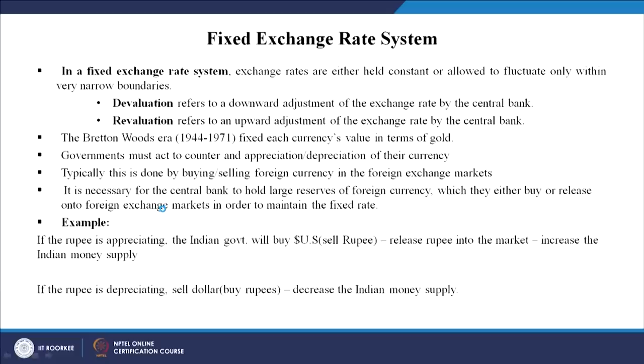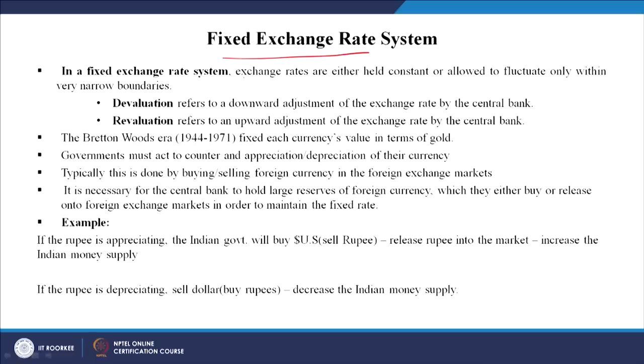As the name suggests, a fixed exchange rate system means it will not move, it will stick as it is. In a fixed exchange rate system, exchange rates are either held constant or allowed to fluctuate only within very narrow boundaries - that means there is a ceiling and a floor. You can fluctuate only in between these boundaries. Whatever ceiling has been decided - say 1.5 to 2 dollars - you can fluctuate only that much; anything beyond that and the government would intervene.